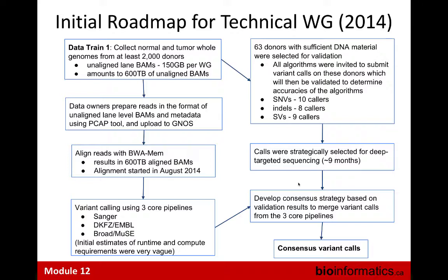We then aligned the BAM files with BWA-MEM. When you align something, you basically double your footprint, so we had another 800 terabytes of aligned BAM. Alignment started in August 2014 and was a continuous process — we aligned as data came in asynchronously. As alignment finished, we did variant calling. We ran three core pipelines: the Sanger pipeline, the DKFZ/EMBL pipeline, and the Broad/MUSE pipeline. We had a very vague idea at the time of how much resource or how long these pipelines would take.